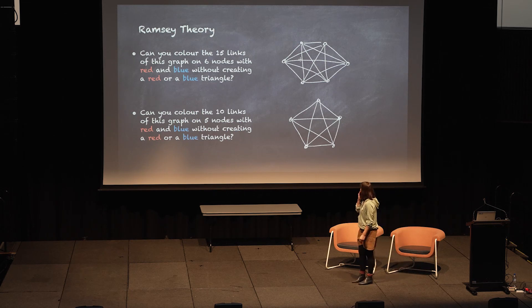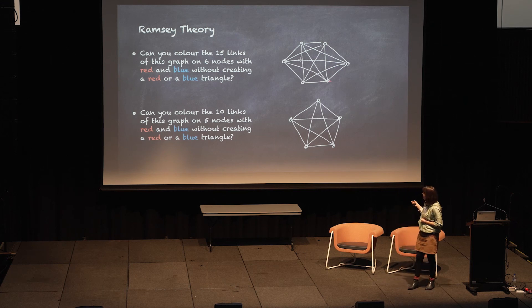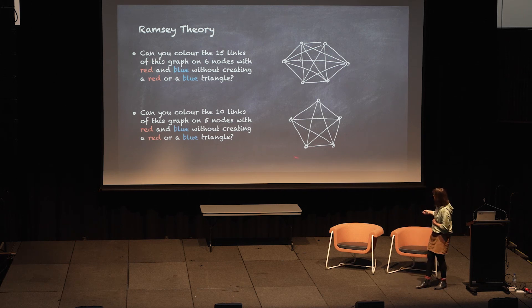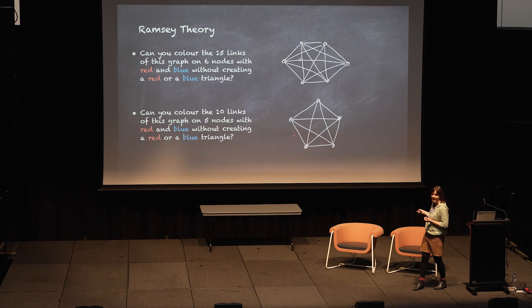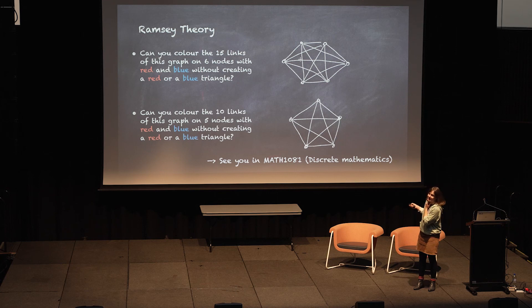This is my last slide. You can analyze real-world networks and find models, but you can also do graph theory for its own sake because it's beautiful. I leave you with these two pictures. This is a graph on six vertices with all links present — can you color this graph with red and blue so that all edges are colored and there is no red triangle and no blue triangle? And then the same question but for this graph with one fewer vertex. I leave that for you to explore today, and if it interests you, I hope to see you in MATH1081, our discrete math course in first year, where you would see this again. Thank you.